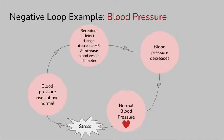A negative feedback loop moves back towards a set point. If we start with a normal blood pressure and then an organism is exposed to stress, the blood pressure would rise above normal. The body's receptors detect the change and then decrease heart rate and increase blood vessel diameter. These effects help decrease the blood pressure and bring it back to normal — back to that set point. This feedback loop would then stop unless the body is exposed to more stress.